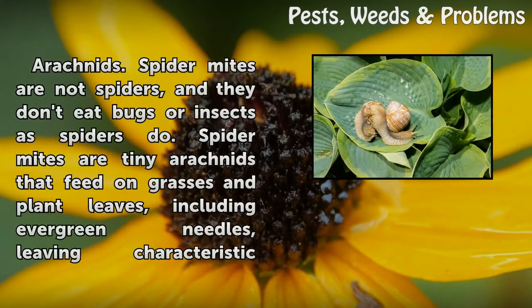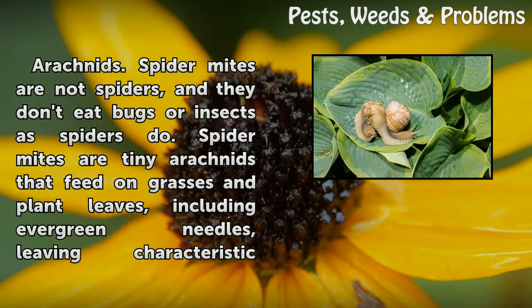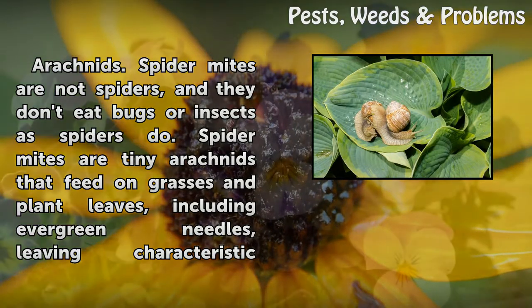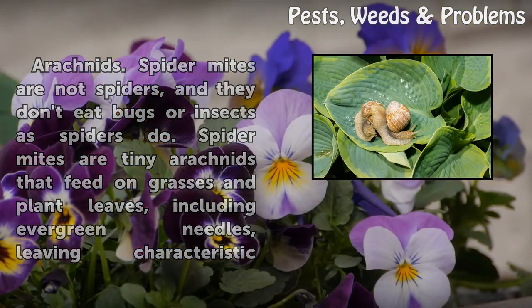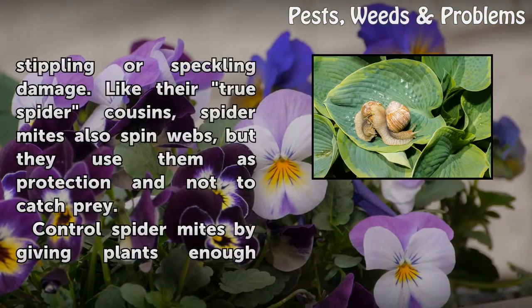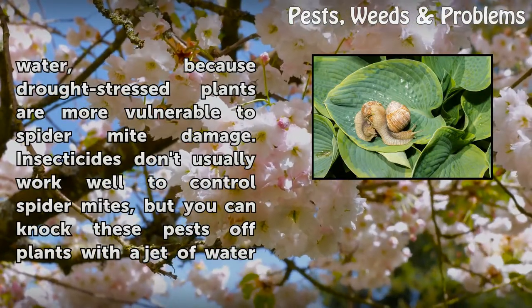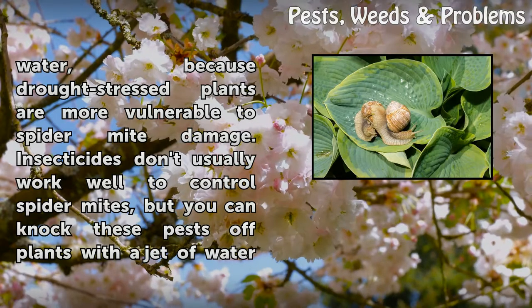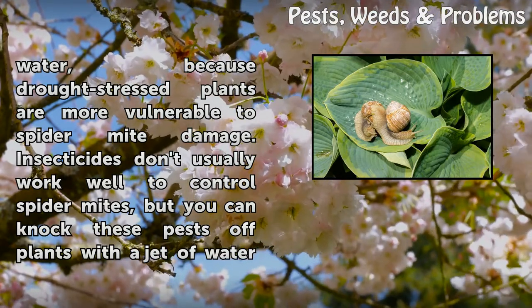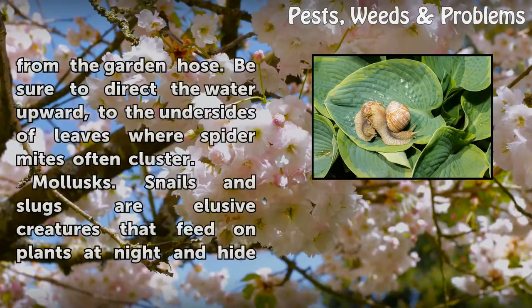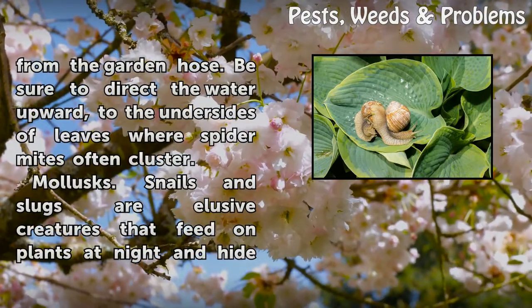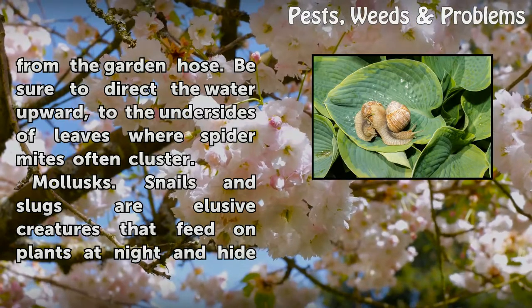Arachnids — spider mites: spider mites are not spiders and they don't eat bugs or insects as spiders do. They are tiny arachnids that feed on grasses and plant leaves, including evergreen needles, leaving characteristic stippling or speckling damage. Like their spider cousins, spider mites spin webs, but they use them as protection rather than to catch prey. Control spider mites by giving plants enough water, since drought-stressed plants are more vulnerable. You can knock mites off plants with a jet of water directed upward to the undersides of leaves where they cluster.